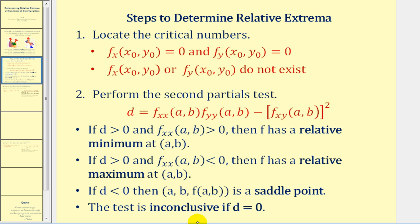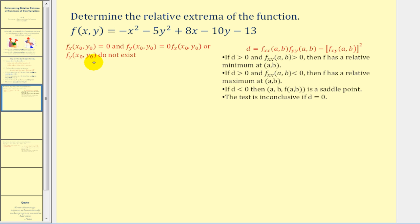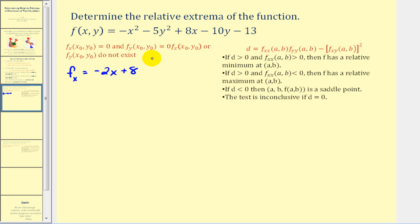Let's go and take a look at our examples. Our first step is to determine when the first-order partials are equal to zero or do not exist. Given our function, the first-order partial with respect to x would be equal to negative two x plus eight — the other terms contributing zero.